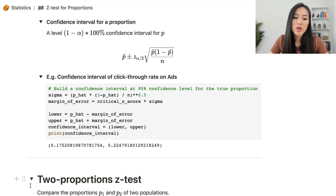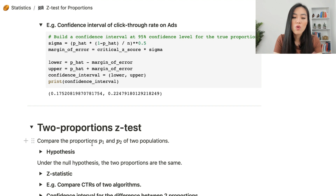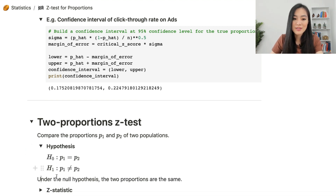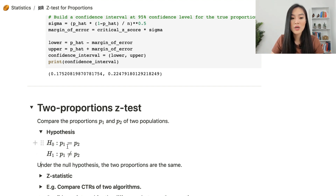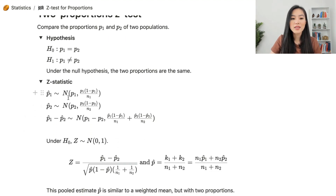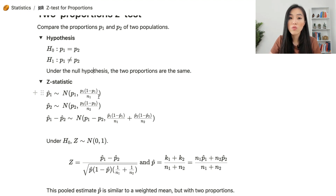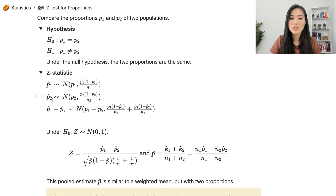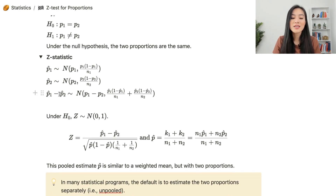Finally, let's look at the two-proportions z-test. We use the two-proportions z-test when we want to compare one proportion with another proportion — basically proportions p1 and p2 of two populations. The null hypothesis is that p1 is the same as p2, and the alternative hypothesis is that p1 is not the same as p2. Similarly to the one-proportion case, we can get the distributions of p1-hat and p2-hat. p1-hat follows a normal distribution with mean p1 and variance p1*(1-p1)/n1, and p2-hat follows a normal distribution with mean p2 and variance p2*(1-p2)/n2. The difference between the two proportions also follows a normal distribution with mean p1 minus p2 and variance equal to the sum of the two variances.